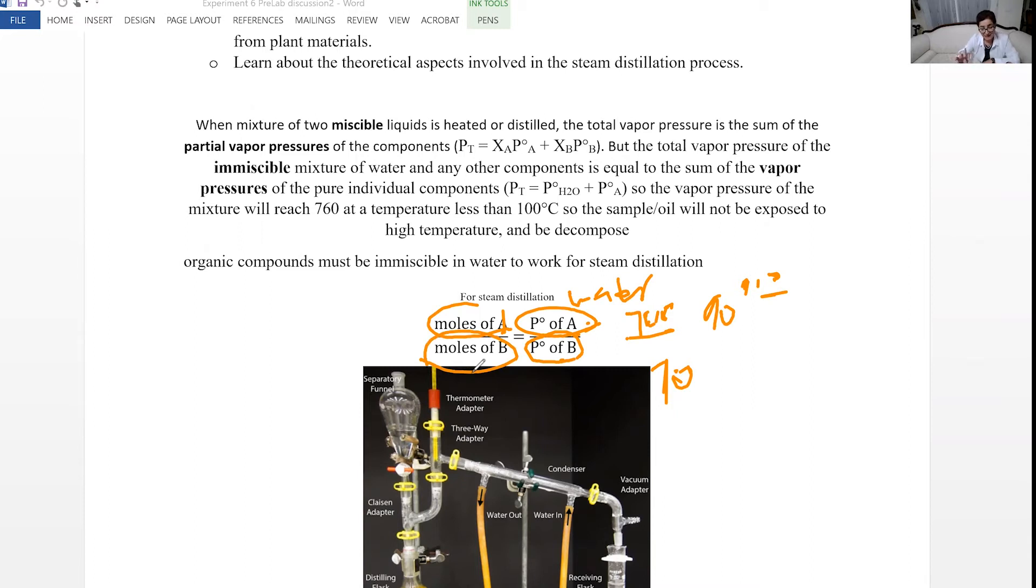So when you start getting the distillate, the procedure might ask you to get like 30 milliliters of the distillate. That 30 milliliters of distillate is not just the oil, it's not the essential oil. If that was the case, essential oils would not be that expensive. They are very expensive because how much cinnamon you want to boil in order to get like 10 grams of eugenol, which is the oil coming from the cloves. So you are going to use a lot of water in this distillation. You want to make sure you have enough water.